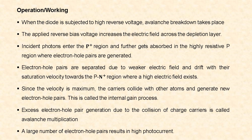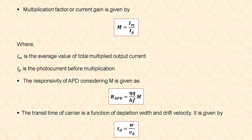A large number of electron-hole pairs results in high photon current. The multiplication factor or current gain is given by M = I_M / I_P, where I_M is the average value of total multiplied output current and I_P is the photo current before multiplication. The responsivity of avalanche photodiode considering the multiplication factor is given as R_APD = (η × q) / (h × f) × M, where η is the quantum efficiency, q is the charge of electron, h is Planck's constant, f is the frequency, and M is the multiplication factor.